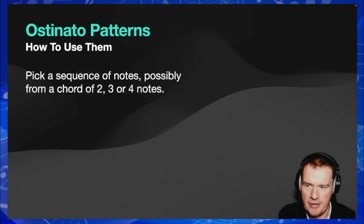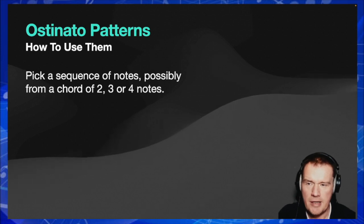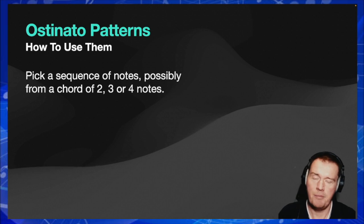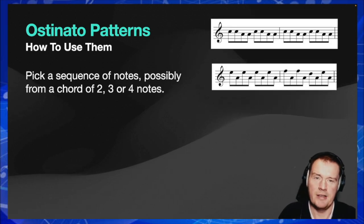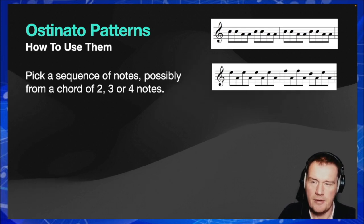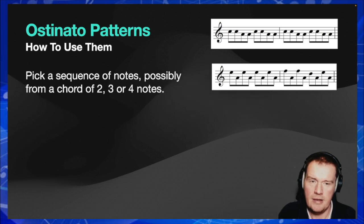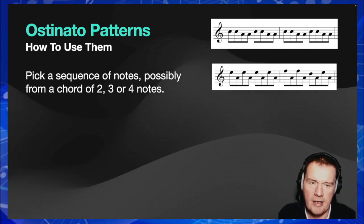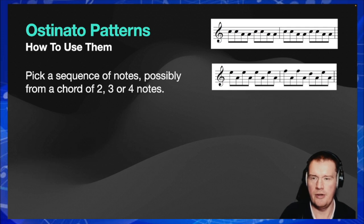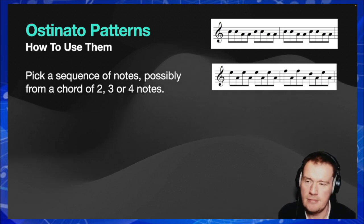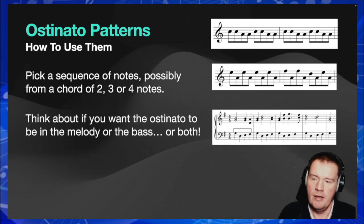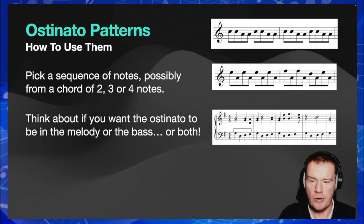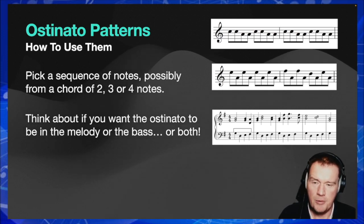So how do we use ostinato patterns? Typically you pick a sequence of notes, possibly from a chord, and pick two, three, or four notes to come up with a pattern. They can be as simple as the examples shown, essentially copying each other until the last phrase — this is where variation comes in as the chord tone or key changes. You also need to decide: do you want the ostinato in the melody, in the bass, or both? The example shown is a bass ostinato.